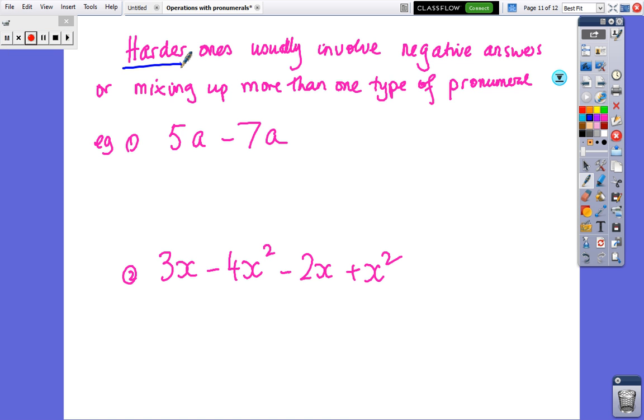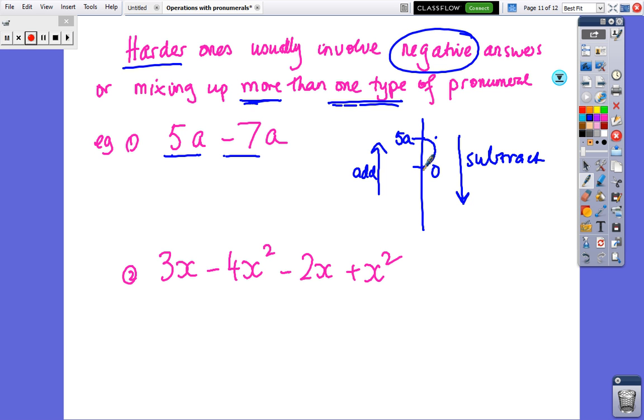So we've got harder ones now, and these usually involve negative answers or when we've got more than one type. So 5a minus 7a. We have a number line. 5a is above 0, and when we subtract, we go down. We go up by adding. So if you start with 5 and you subtract 7, you go down to 0 - you've used up 5, so you've got 2 more to go. And the answer must be minus 2a. And again, you'll have practice on negatives.